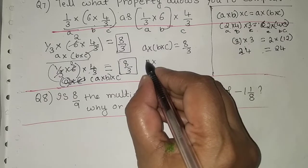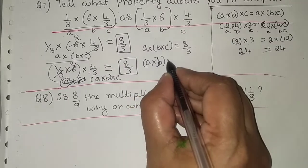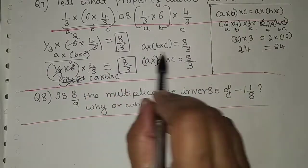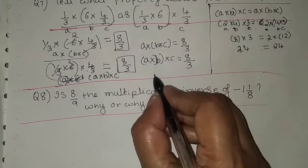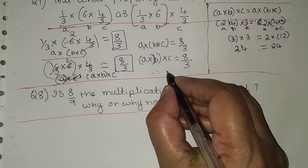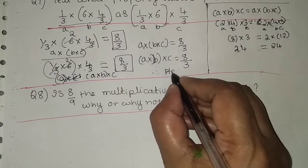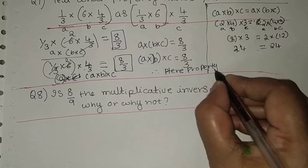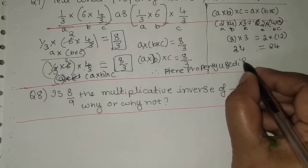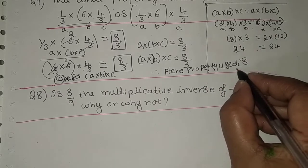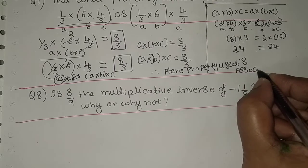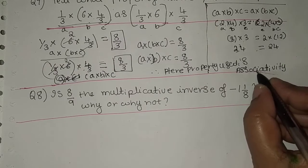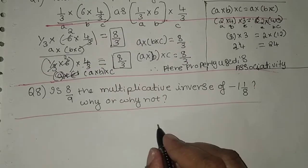In both cases, a into b into c equals 8/3, and a into (b into c) also equals 8/3. The order of grouping is changed but the result is the same in both cases. Therefore, the property used is associativity.